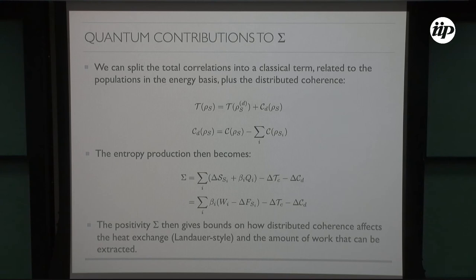Finally, you can play the same game. You can write the total correlations as total correlations in a diagonal basis energy basis plus a term which is again the distributed coherence, but the multi-partite distributed coherence—a sort of basis-dependent discord. Substituting this here, you get that the entropy production will be a sum of local terms minus a change in classical correlations, which is what you would get for completely diagonal states of probability distributions.